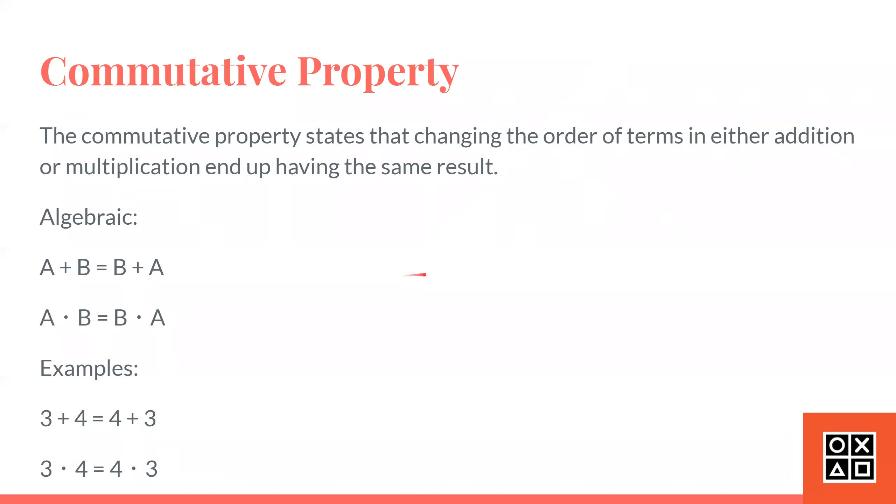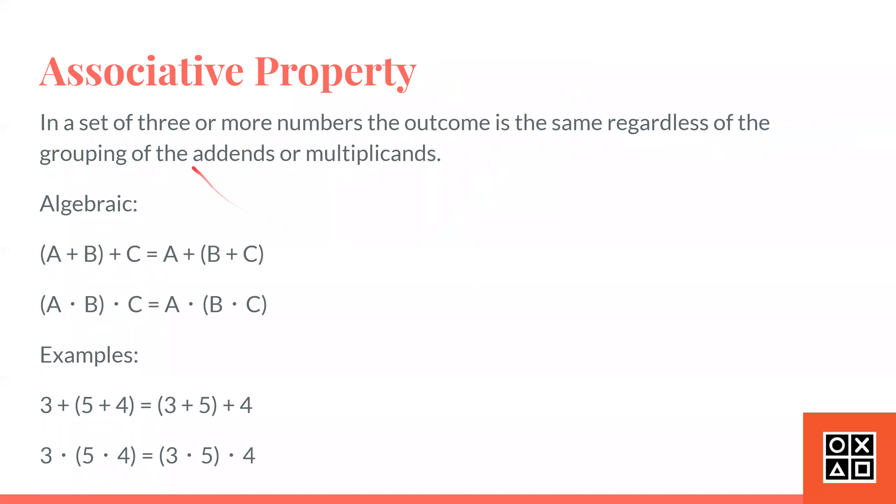Let's go on to the next property. The next property is the associative property. In a set of three or more numbers, the outcome is the same regardless of the grouping of the addends or multiplicands.